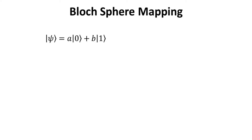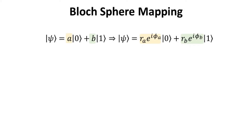Now that we have shown that a complex number can be written in polar form, we go back to the original qubit. We replace the complex coefficients A and B with their polar representations: R_A times e to the i·phi_A and R_B times e to the i·phi_B, respectively.